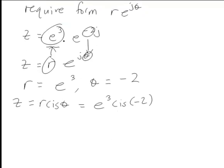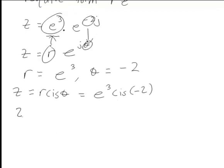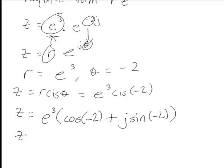And from there it's just a straightforward case once again of doing what we did before, expanding that as e cubed cos negative 2 in this case plus j sine negative 2. And when we work that out, that will just be e cubed cos negative 2 plus e cubed j sine negative 2.